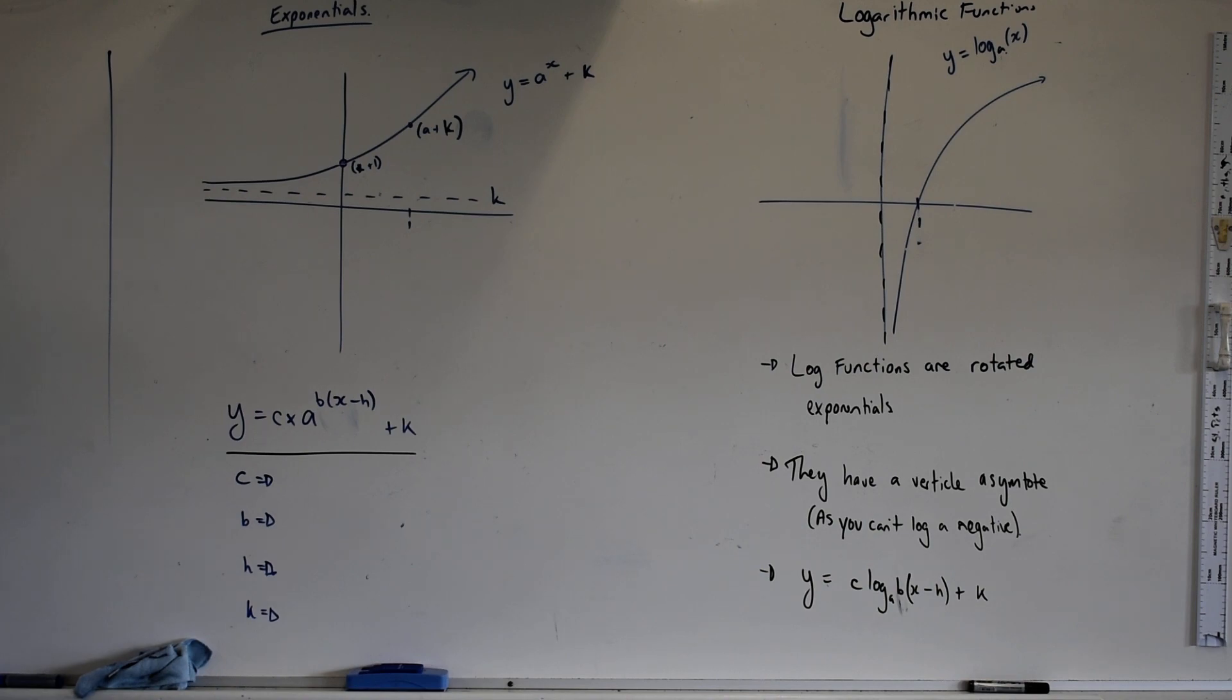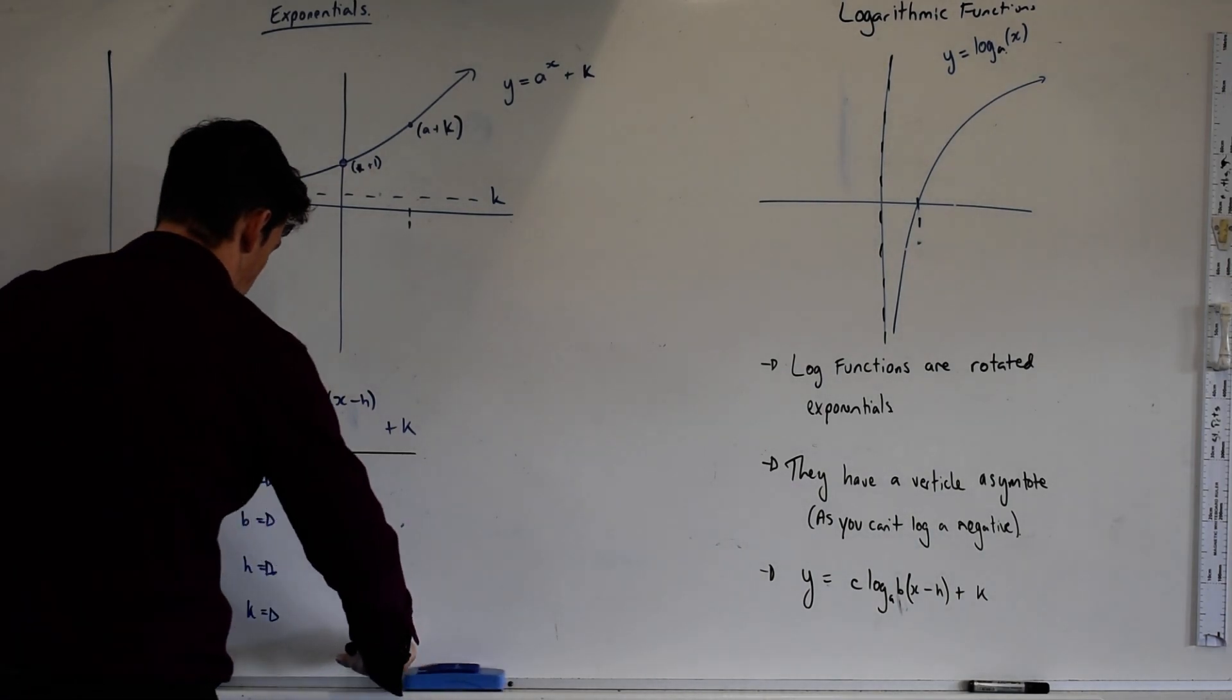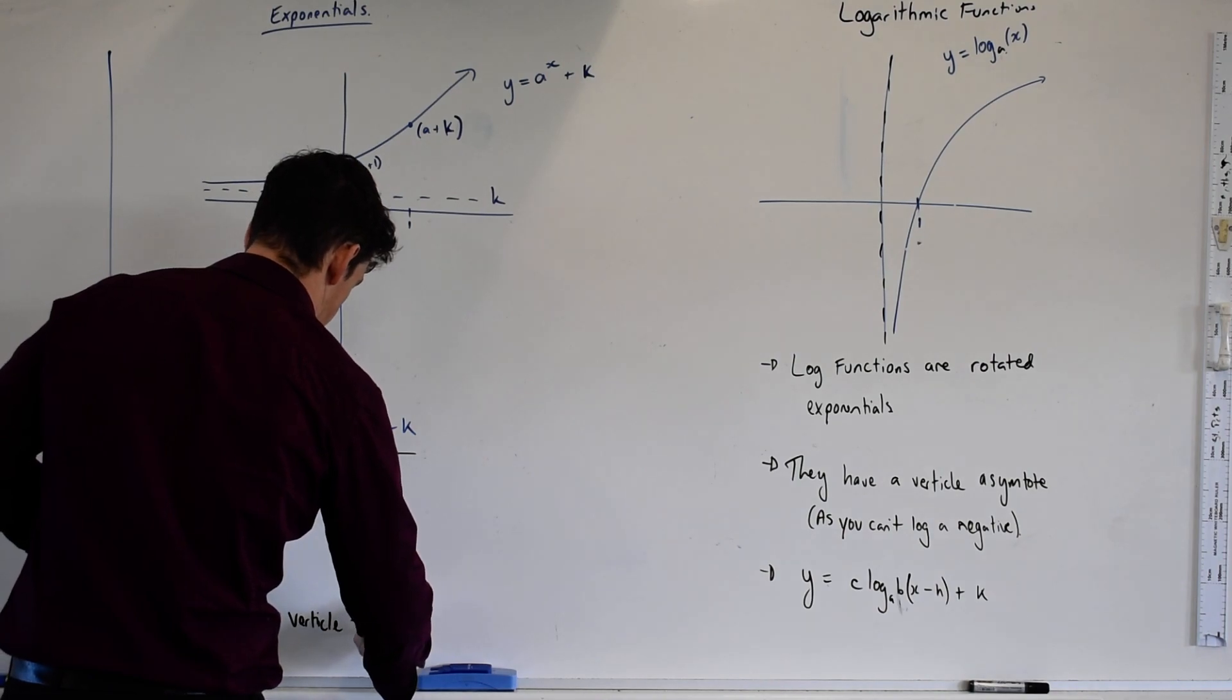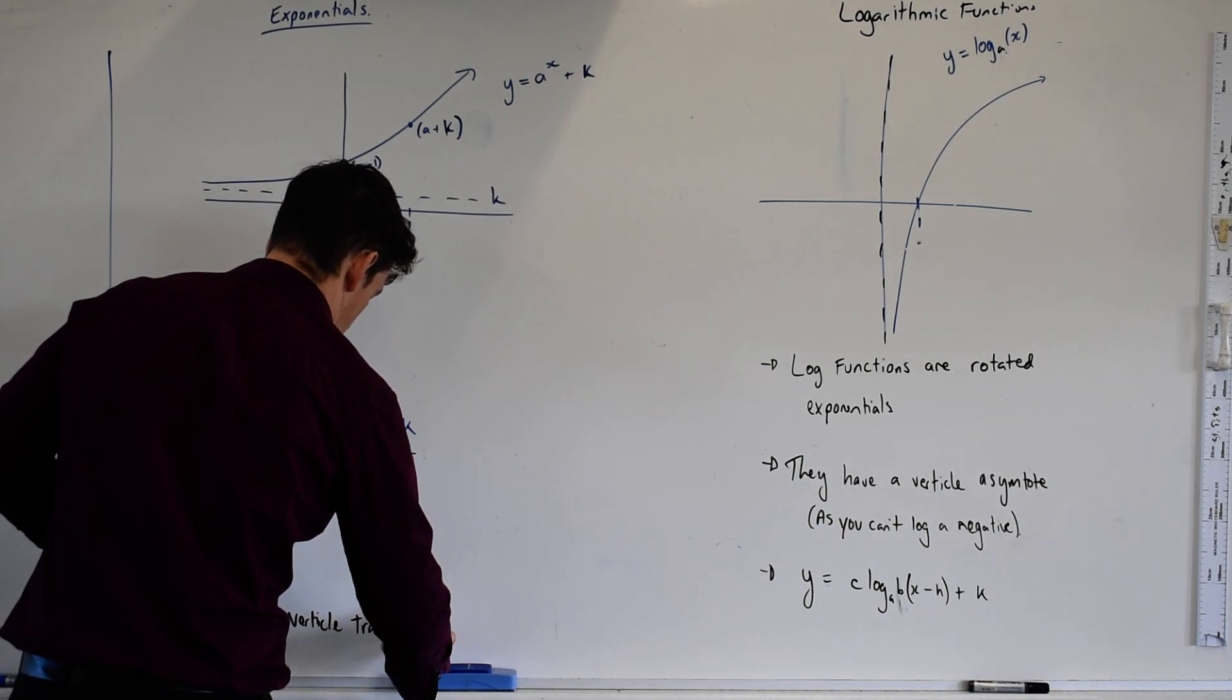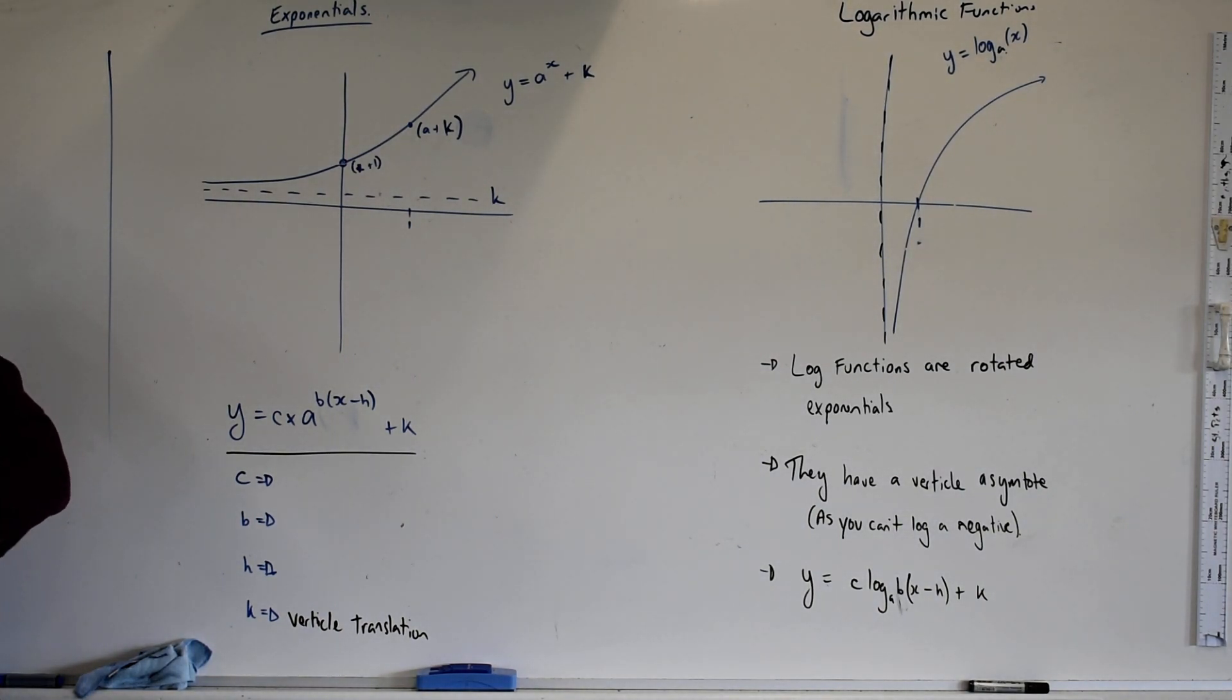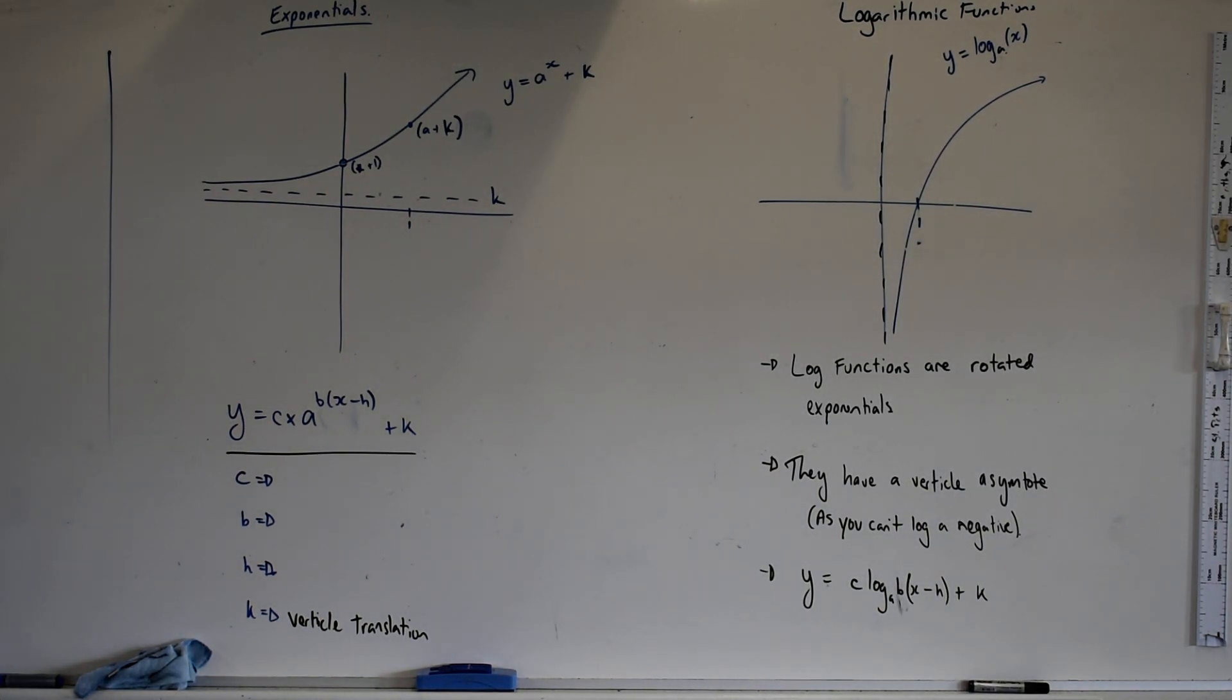What do you think the k value does? Up and down. So we call that a vertical translation. So that's literally just picking our function, moving it up or moving it down, depending on our k value. We're pretty happy with that. We've done it before.